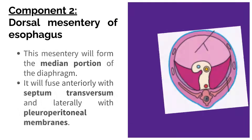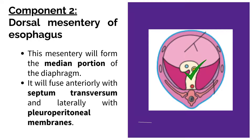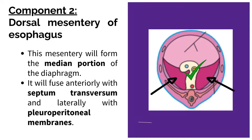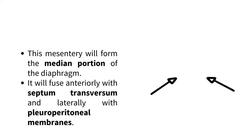Component 2: Dorsal mesenteria esophagus. This mesenteria will form the median portion of the diaphragm. It will fuse anteriorly with the septum transversum, and laterally with the pleuroperitoneal membranes.